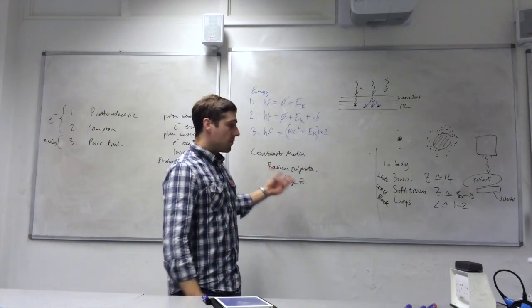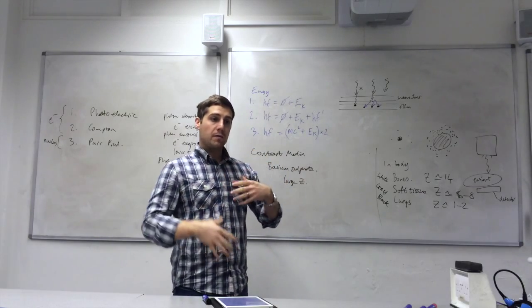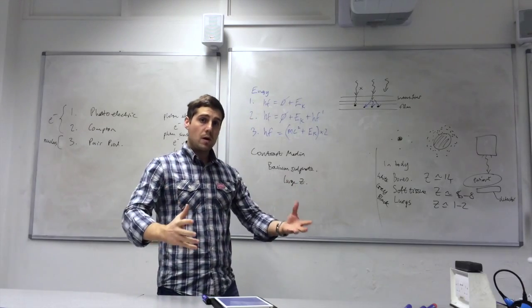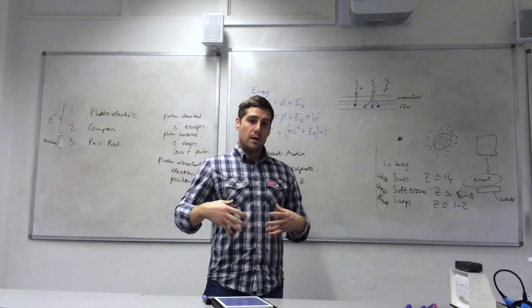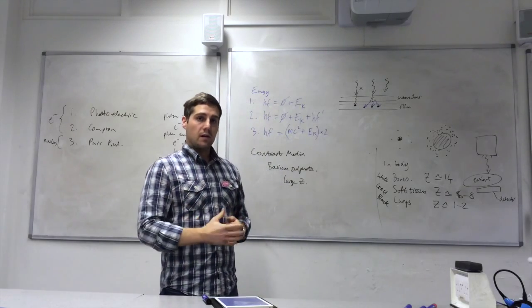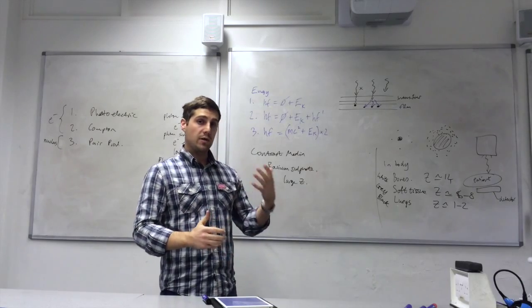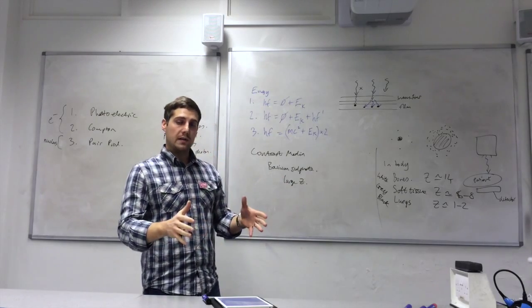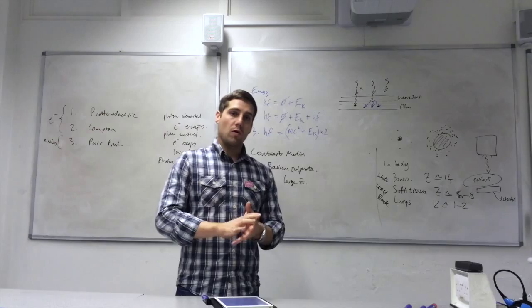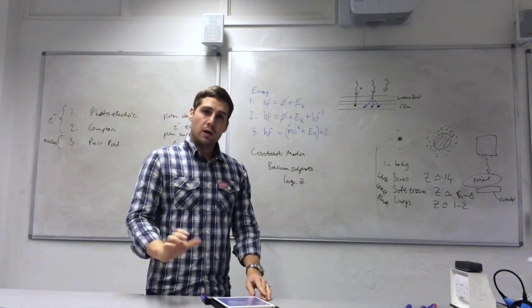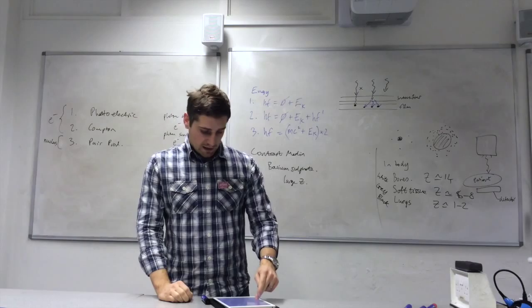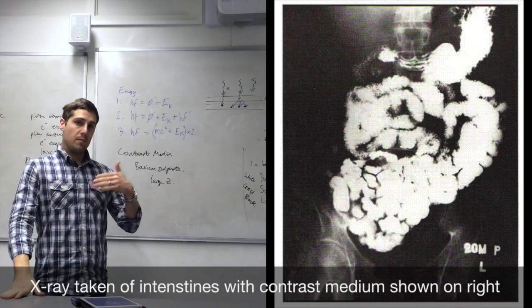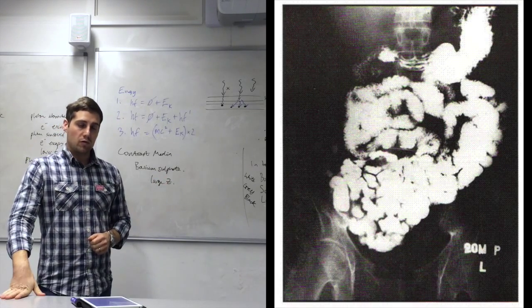By taking barium sulphate into the body, ingesting it through the mouth, then the barium sulphate can coat the intestines, which is soft tissue, and therefore the average atomic number for the intestines is increased appreciably. And that allows you to get a good X-ray image of the intestines, so you can see if there's something wrong, some blockage, some constriction in the intestines. So that's how you can get an image of soft tissue by using contrast medium.